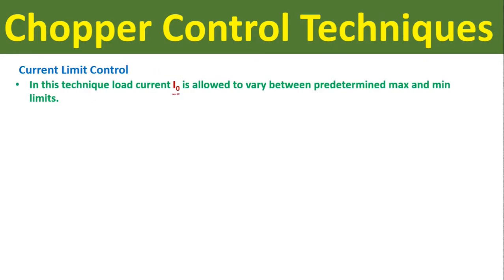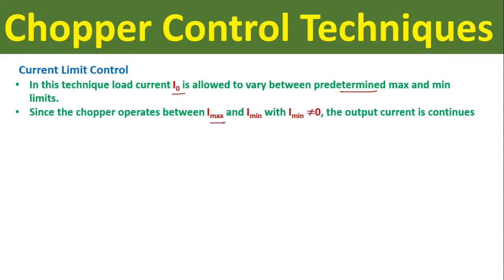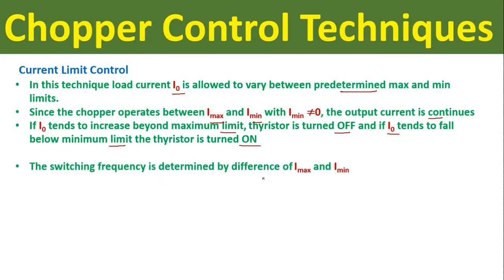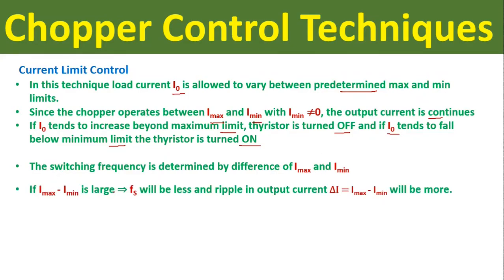The second chopper control technique is current limit control. As the name suggests, it is related to the load current or output current. In this technique the load current I0 is allowed to vary between predetermined maximum and minimum limits. Since the chopper operates between I0_max and I0_min with I0_min not equal to zero, the output current will be continuous in nature. If the load current tends to increase beyond the maximum limit, the thyristor goes into the off condition; if it tends to fall below the minimum limit, the thyristor goes into the on condition. The switching frequency is determined by the difference I0_max minus I0_min — if this difference is large, switching frequency will be less and ripple in output current ΔI0 will be more.